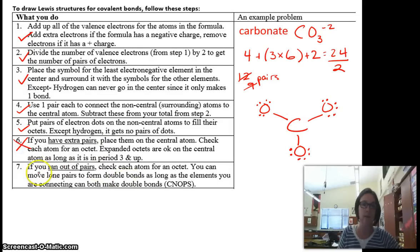If I ran out of pairs, check each atom for an octet. Well, we know that the oxygens do because we put 6 electrons plus a bond. That's 8. But if we check the carbon in the middle, the carbon is only making 3 bonds. So that's only 6 electrons. It does not have an octet. So that means we need to see, could we move some lone pairs to make double bonds?